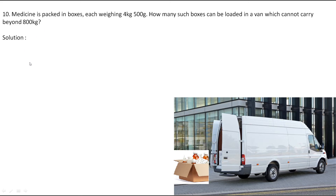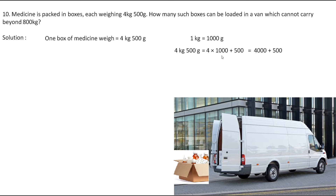One box of medicine weighs 4 kg 500 grams. Let's convert this into grams first. We know that 1 kg equals 1,000 grams, so 4 kg 500 grams can be written as 4 × 1,000 + 500 = 4,000 + 500 = 4,500 grams. So 4 kg 500 grams can be written as 4,500 grams.